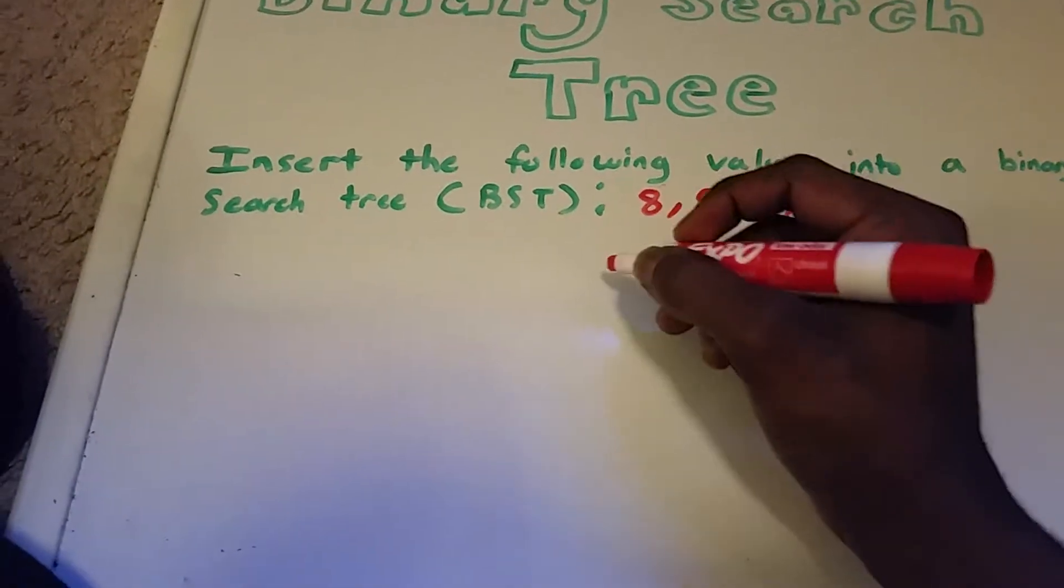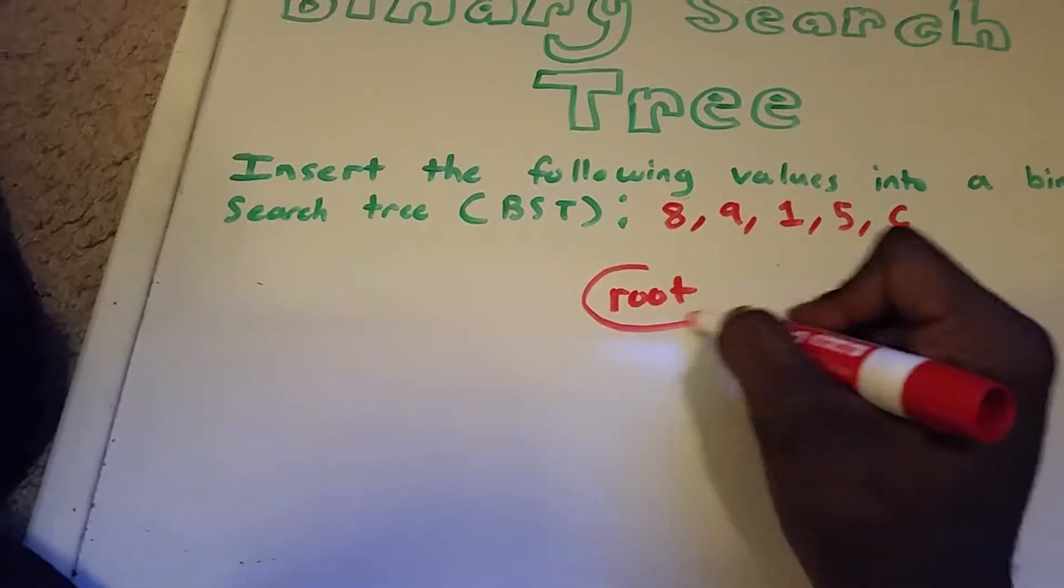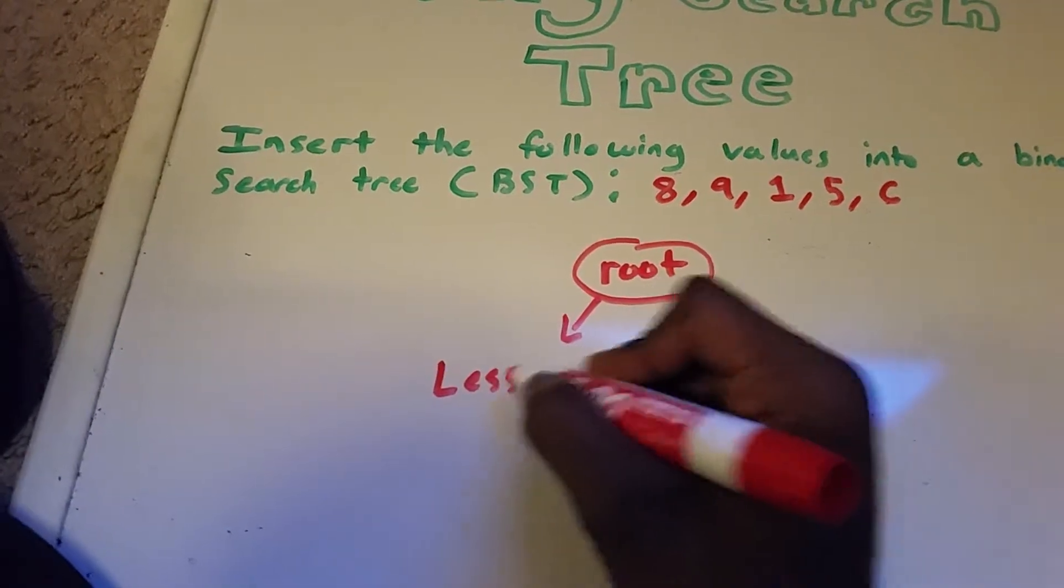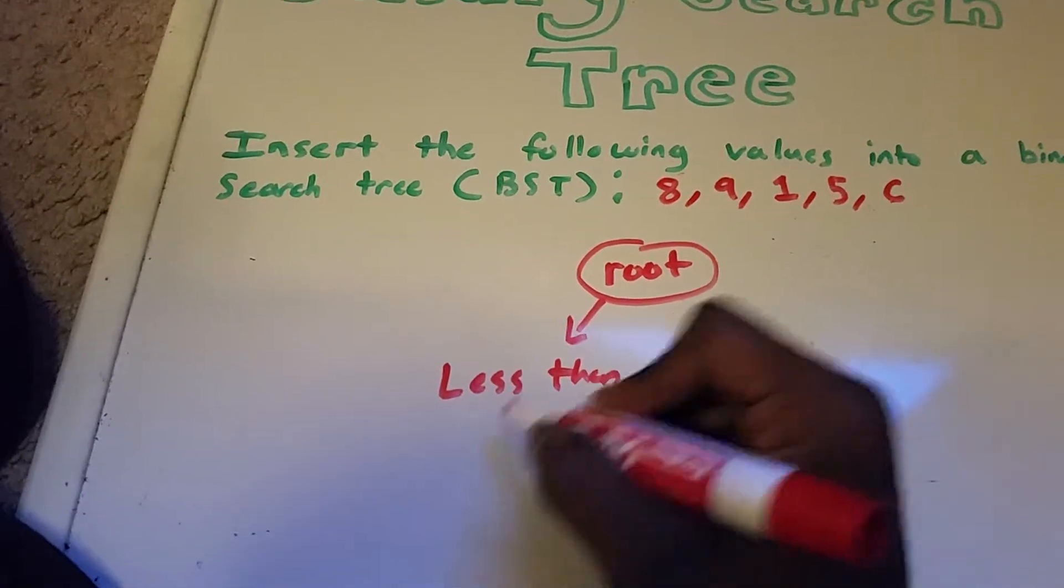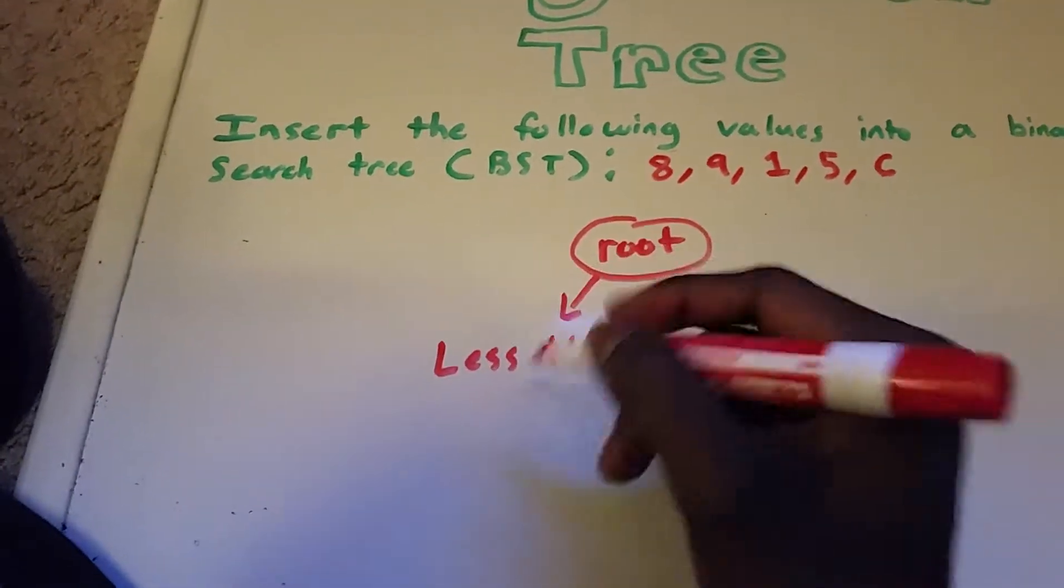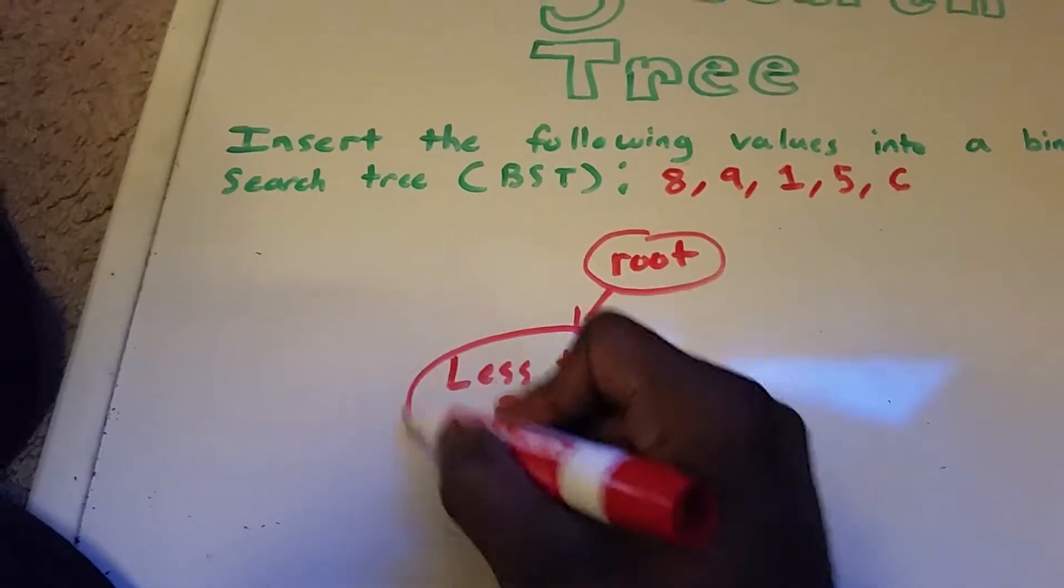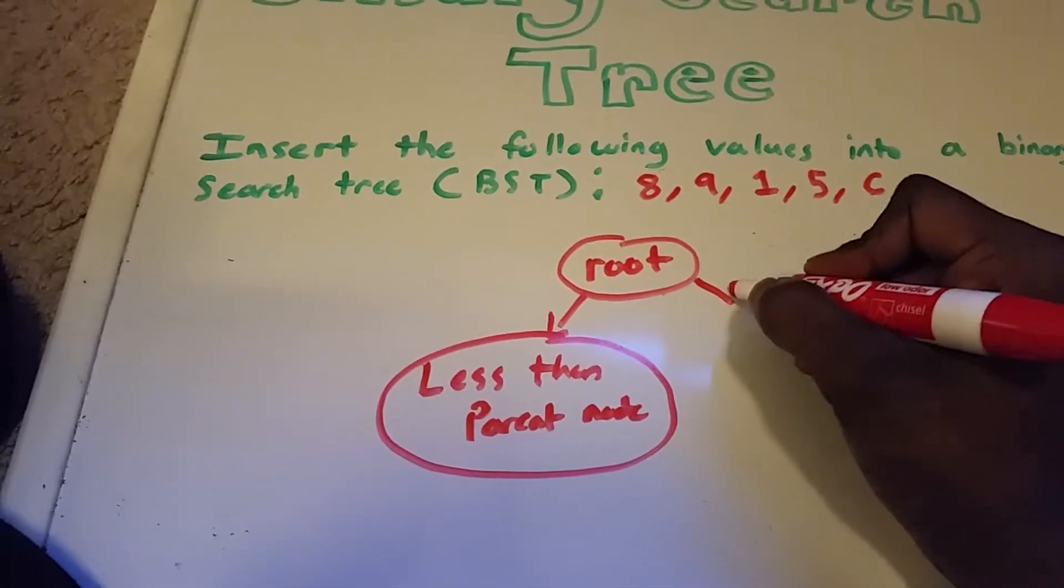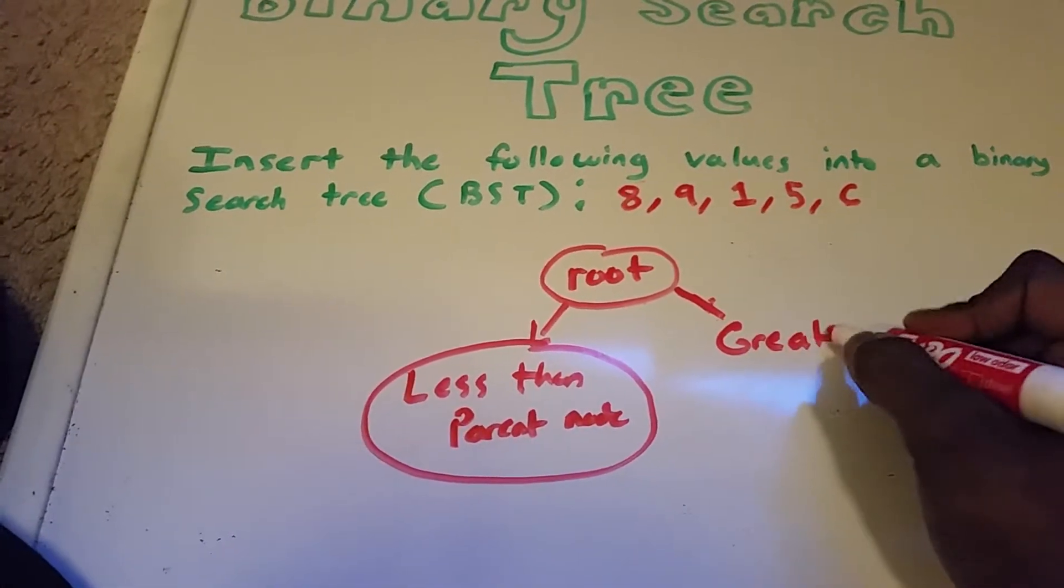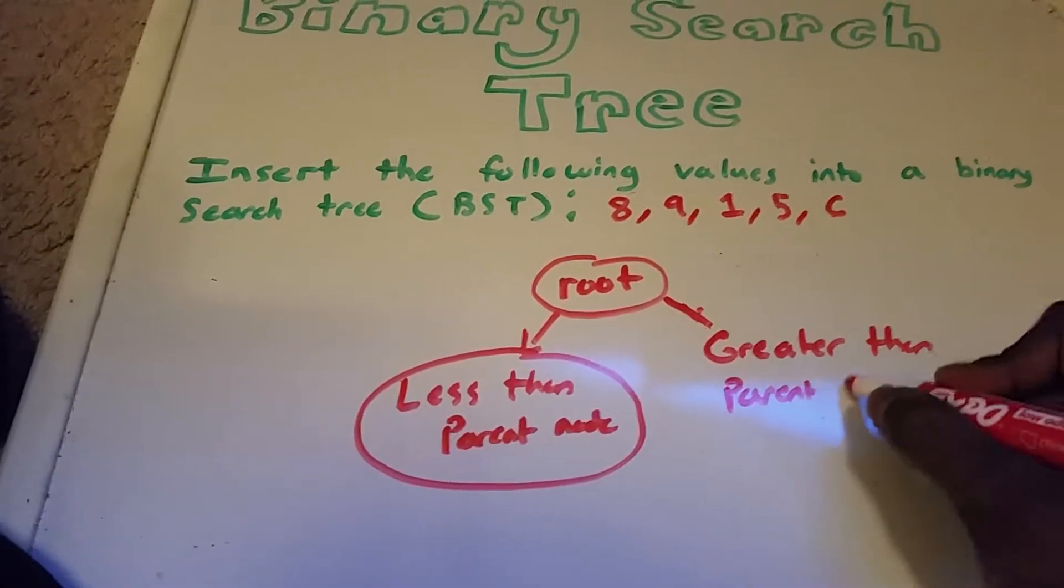And the idea of a binary search tree is that you have a root node and everything to the left is always going to be less than the root or less than the parent node. And everything on the right is going to be greater than the parent node.